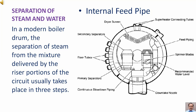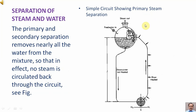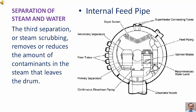The dry pipe is an early form of separator that is still found on some low pressure boilers. In a modern boiler drum, the separation of steam from the mixture delivered by the riser portion of the circuit usually takes place in three steps. The primary and secondary separation removes nearly all the water from the mixture, so that in effect no steam is circulated back through the circuit. The third separation, scrubbing, removes or reduces the amount of contaminants in the steam that leaves the drum.